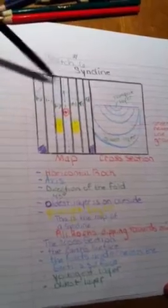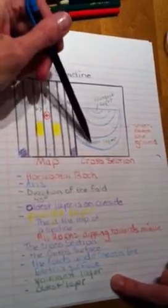The youngest layer is on the inside, and this is the map side of a syncline. All rocks are dipping towards the middle. The cross section shows the youngest layer here.